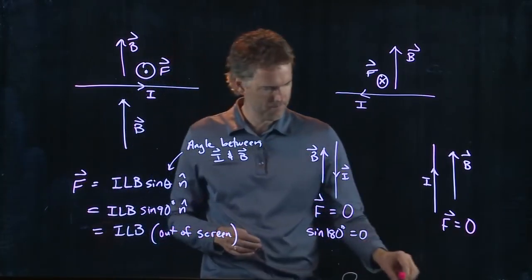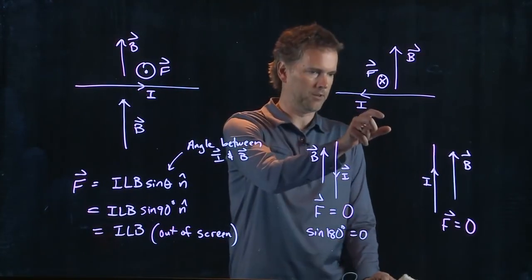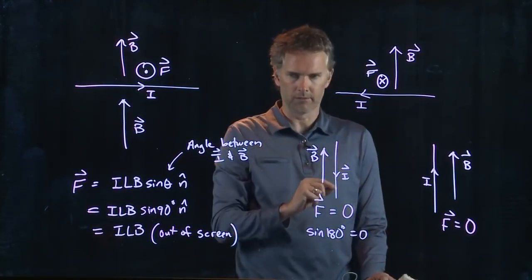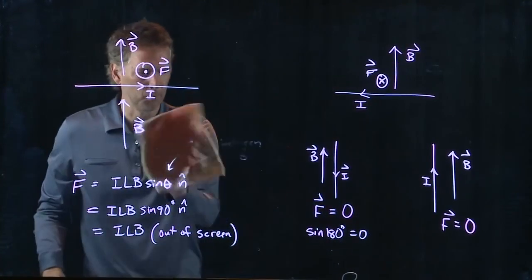But this looks like a section of wire. This looks like a section of wire. These two are sections of wire. Can we just put them all together into one loop?